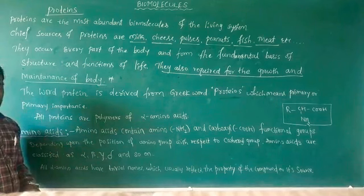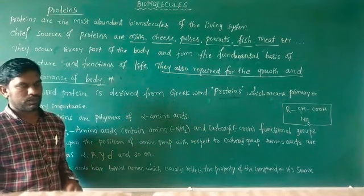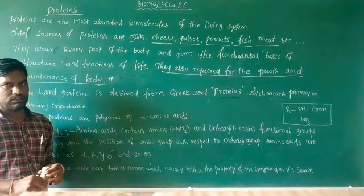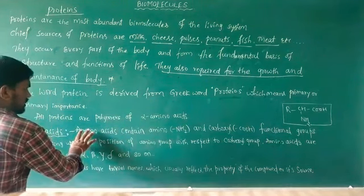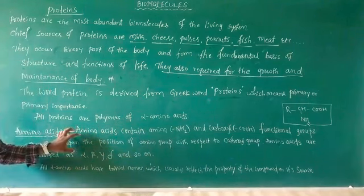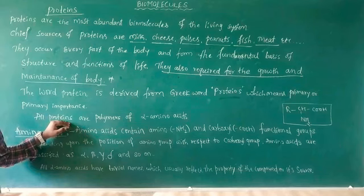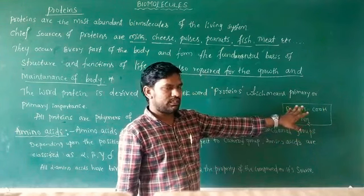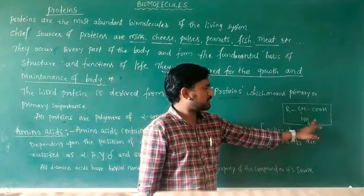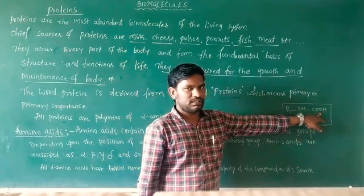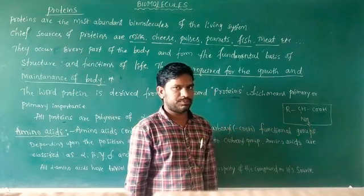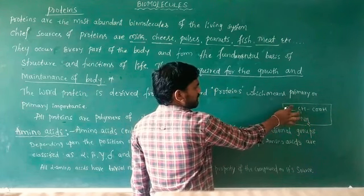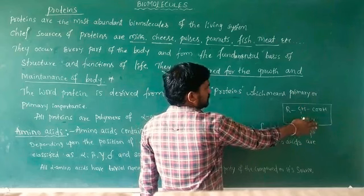All proteins are polymers of alpha amino acids. The amino acids are the building blocks. The general formula of amino acids is CH(NH2)(COO)R. This means amino acids are bifunctional — one is the amino group (NH2) and one is the acidic group (COOH). Where R is variable — R may be alkyl or cyclic.